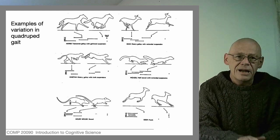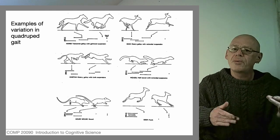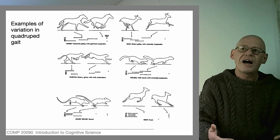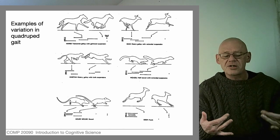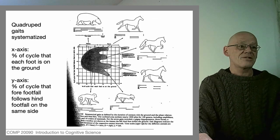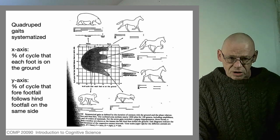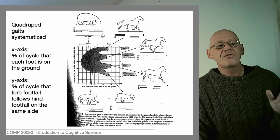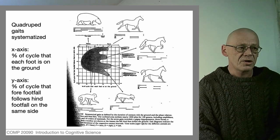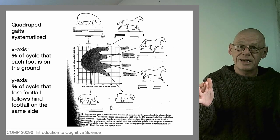This notion of phase is turning out to be quite useful because it allows us to group a whole set of disparate observations and systematize them, so that we can see them as different variations of the same underlying principle. Here's an extreme example of that taken to great lengths: many hundreds of species were looked at, all quadrupeds with four legs. For each gait of each species, two data points were noted: the percentage of the cycle that each foot is on the ground.